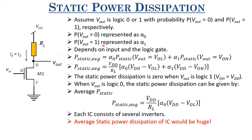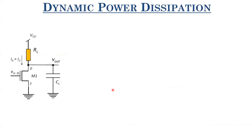Now let us move on to dynamic power dissipation. For dynamic power dissipation, we assign a load capacitor at the output. We are talking about switching power — the transition of output from 0 to 1 and 1 to 0. Power is consumed from the supply only when the output is transitioning from logic level 0 to logic level 1, because then charge is taken from the supply and dumped onto the capacitor.